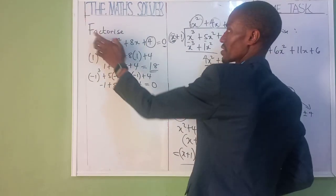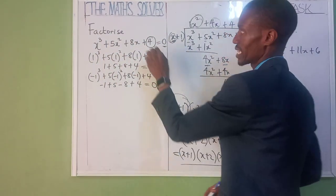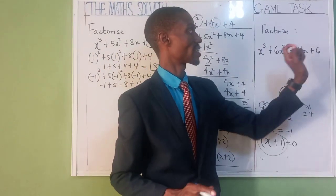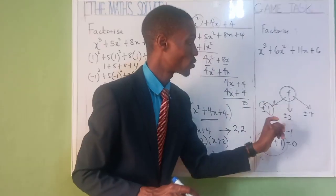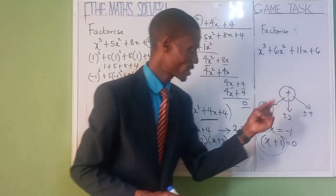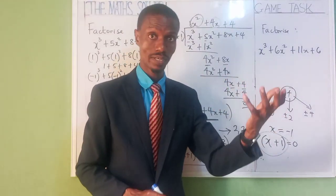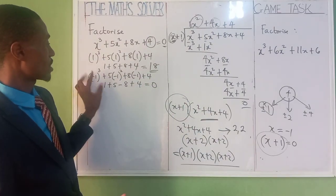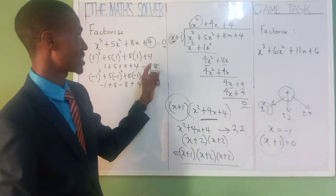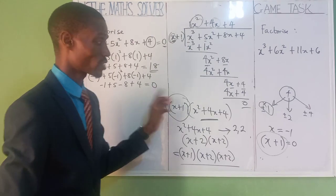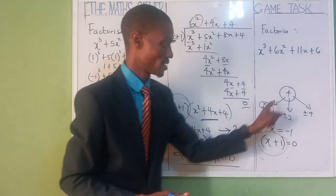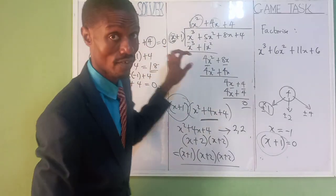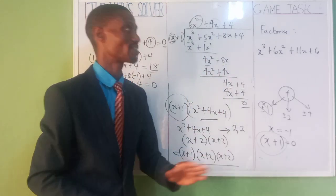Let's go through it again. Our question was x cubed plus 5x squared plus 8x plus 4 equals 0. The last number is 4, so you write down the factors of 4. You use plus or minus 1, 2, and 4, and find the one that gives 0. This gave us x equals minus 1, which means x plus 1 equals 0 — that's our first factor. Then we divide the original polynomial by x plus 1 to get the remaining quadratic, and factorize further.